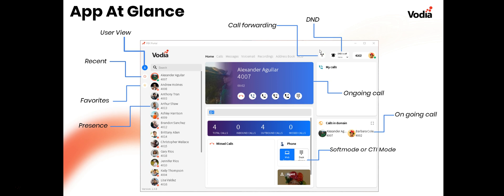Up at the top we've got a couple of call control options. This button here is for forwarding your calls, and you can also toggle Do Not Disturb on or off. In the middle of the screen is the actual active call, and there are different icons for controlling the call — putting it on hold, transferring, and such.